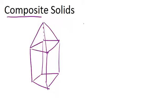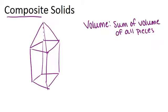To find the volume of a composite solid, all you have to do is find the volume of all the different solids that you can figure out the volume of and add them up. So the volume is the sum of the volume of all the pieces.